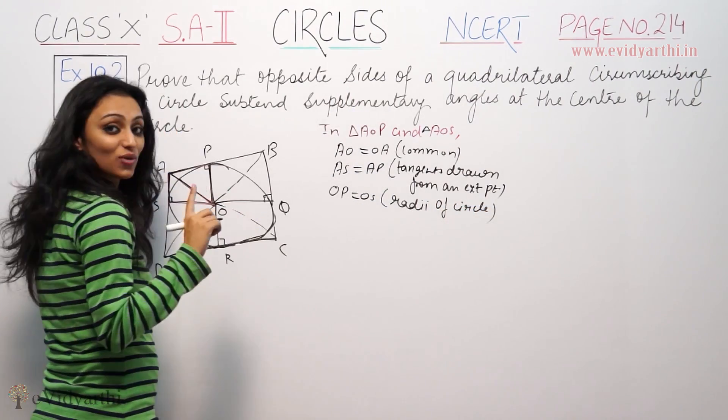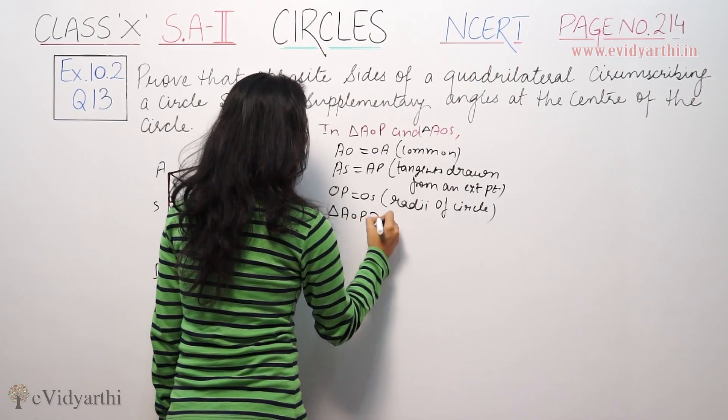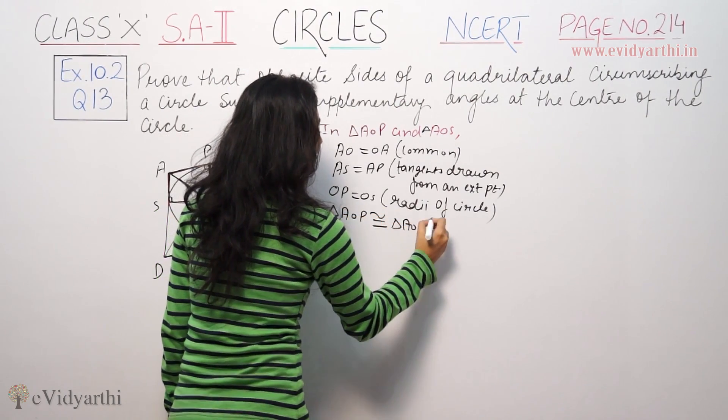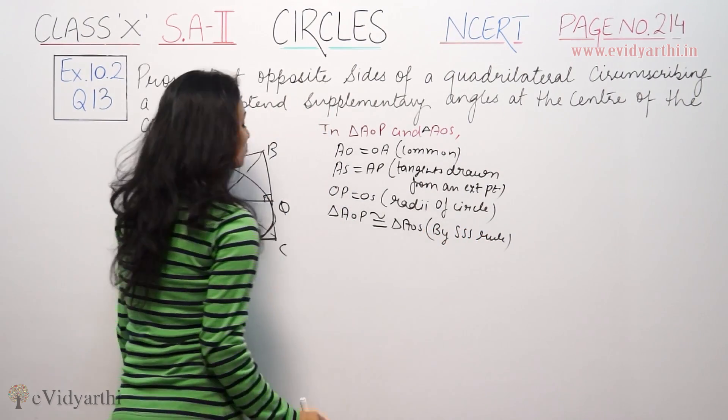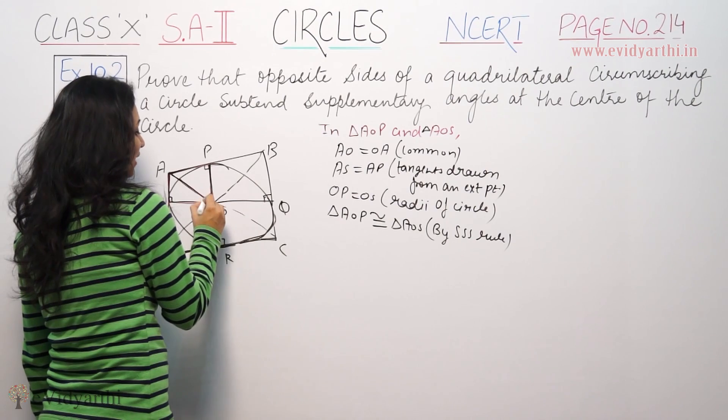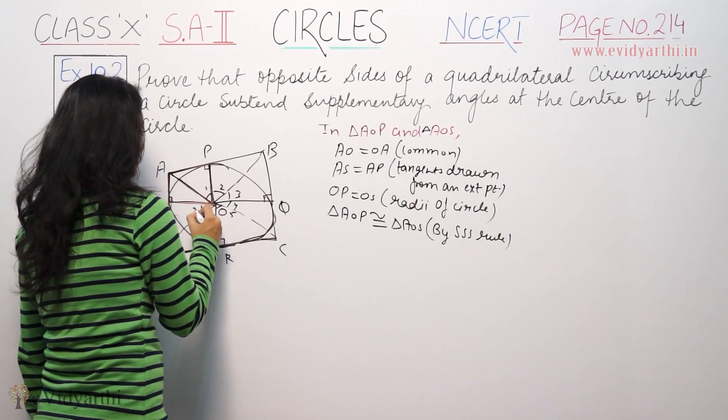So by SSS congruence, triangle AOP is congruent to triangle AOS. By CPCT the corresponding angles are equal. Now I am marking these angles 1, 2, 3, 4, 5, 6, 7, 8.